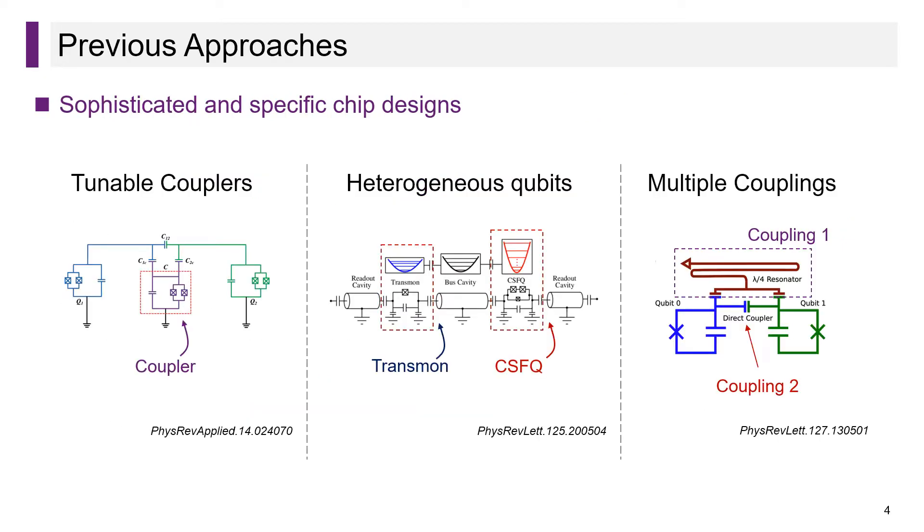Indeed, researchers have already made many efforts. Most of their methods rely on sophisticated and specific chip designs. This slide shows three popular methods: introducing a tunable coupler between qubits, using heterogeneous qubits, or constructing multiple coupling paths.